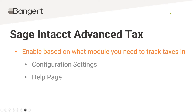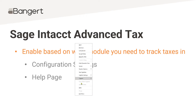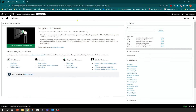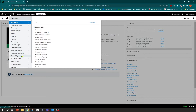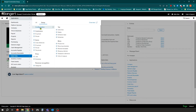To end this overview session, we're actually going to show you where you need to first enable advanced tax — we need to see if you have that enabled in your instance. That is done inside the configuration settings of either order entry or purchasing, it's actually the same location. You can enable it based on which module you need to turn it on for. I'm going to jump over to my demo instance and go into order entry, then go to setup configuration.